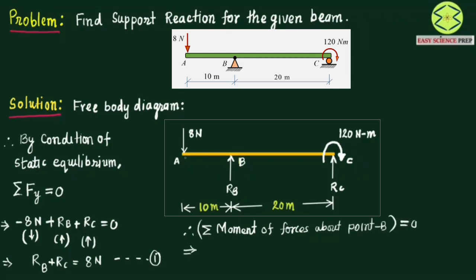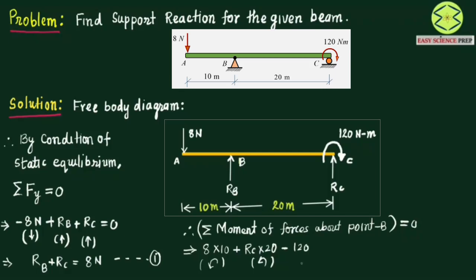We keep point B as the hinge and allow the beam to rotate under the action of various forces. When we apply 8 Newton, the beam rotates in the counterclockwise direction about B. I am considering counterclockwise as positive and clockwise as negative. RC also rotates the beam about point B in the counterclockwise direction, so both the moment due to 8 Newton and the moment due to RC are positive. However, the 120 Newton meter moment is acting in the clockwise sense, so it will be negative.